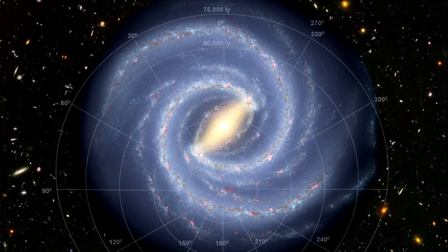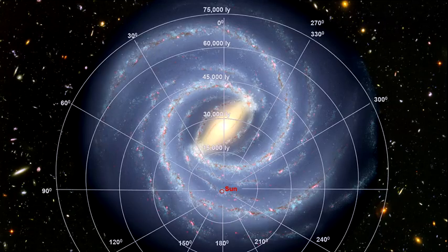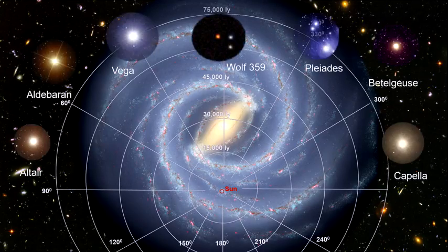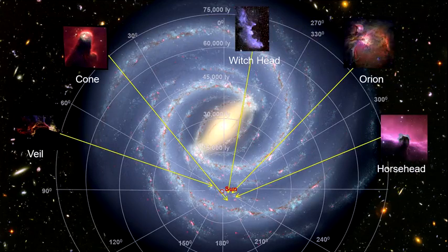If we lay a grid over the galaxy, we can locate some of the stars, nebulae, and H2 regions we have seen in this chapter. All the local neighborhood stars would fit into the red circle used to locate our solar system — stars like Wolf 359, Altair, Vega, Polaris, Capella, Aldebaran, the Pleiades, and Betelgeuse. They are all with us in the Orion Spur, as are the Orion, Horsehead, Cone, Witch's Head, Veil, and many other nebulae.